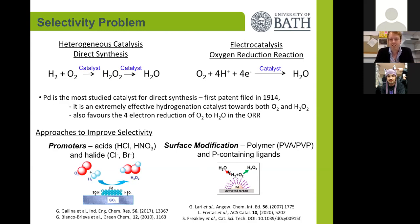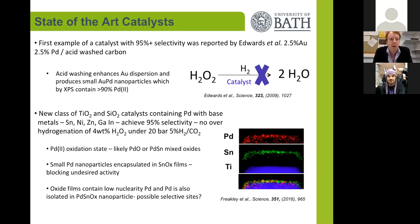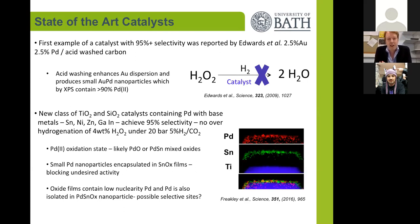Despite these challenges, a number of catalyst systems have been developed which are able to show over 95% selectivity towards hydrogen peroxide from hydrogen and oxygen in the absence of acid and halide promoters. The first example was reported by Edwards in Science in 2009, where acid washing a carbon support material could lead to a very high and good dispersion of gold-palladium particles on these surfaces, which showed minimal activity towards over-hydrogenation of hydrogen peroxide.